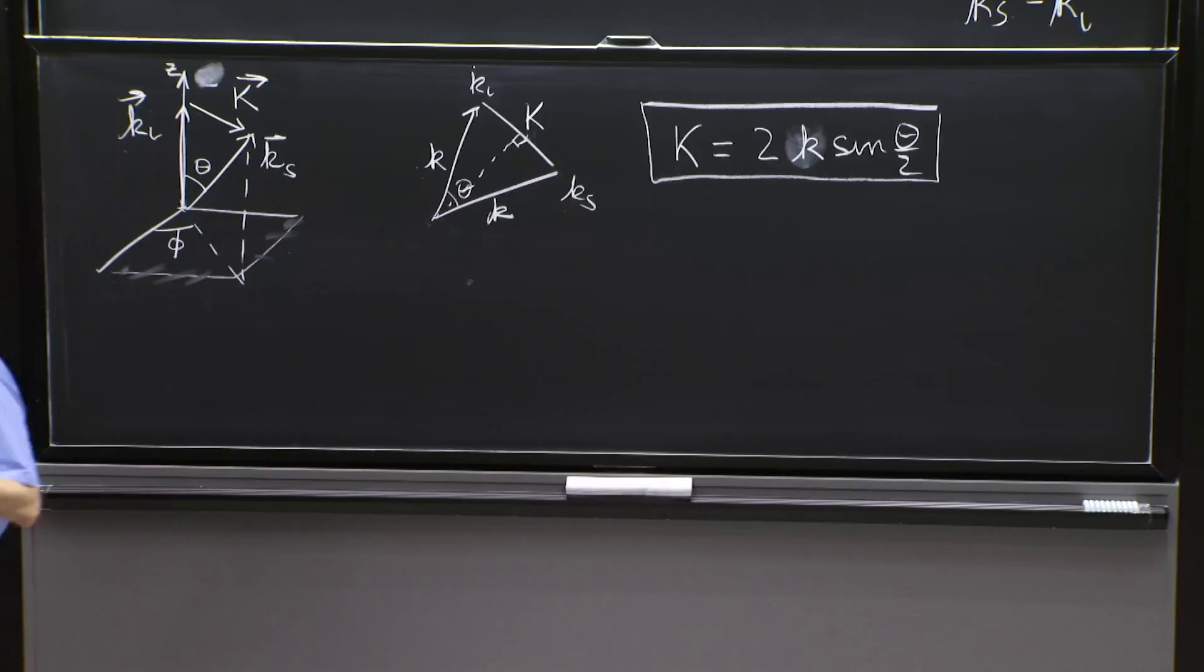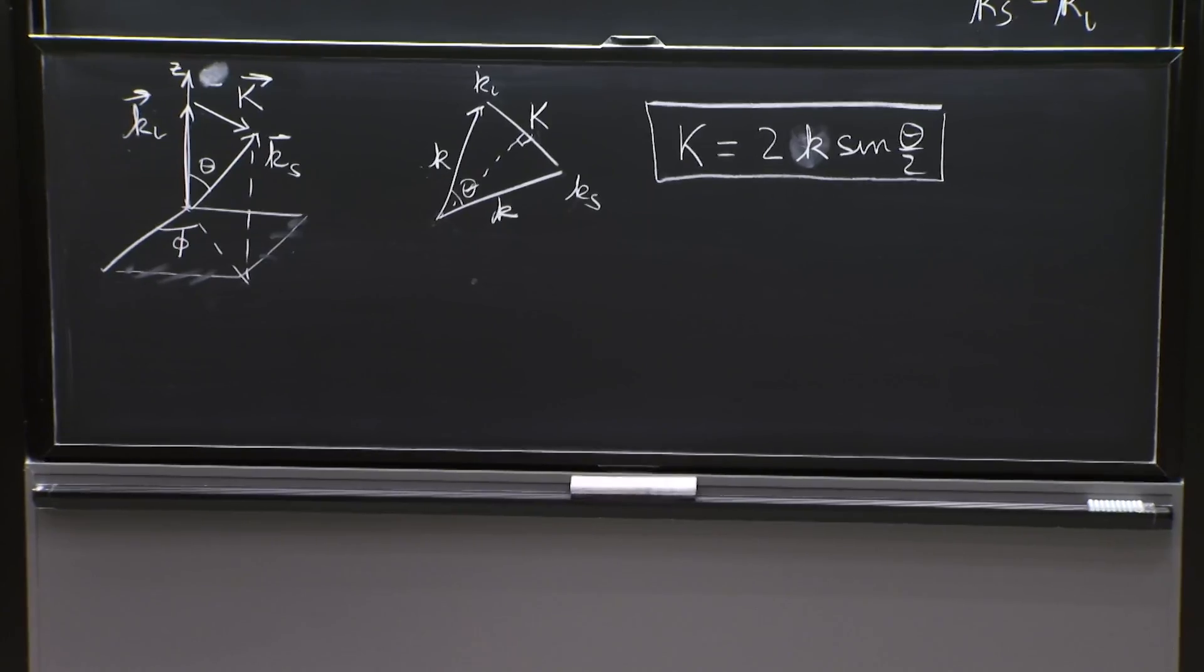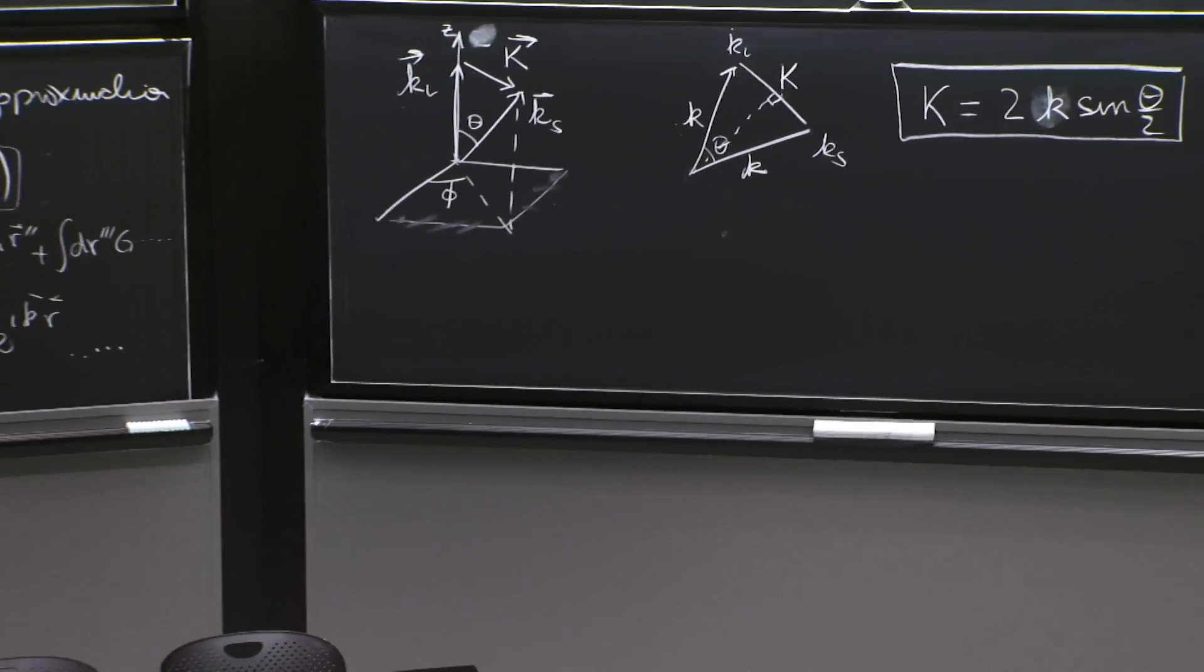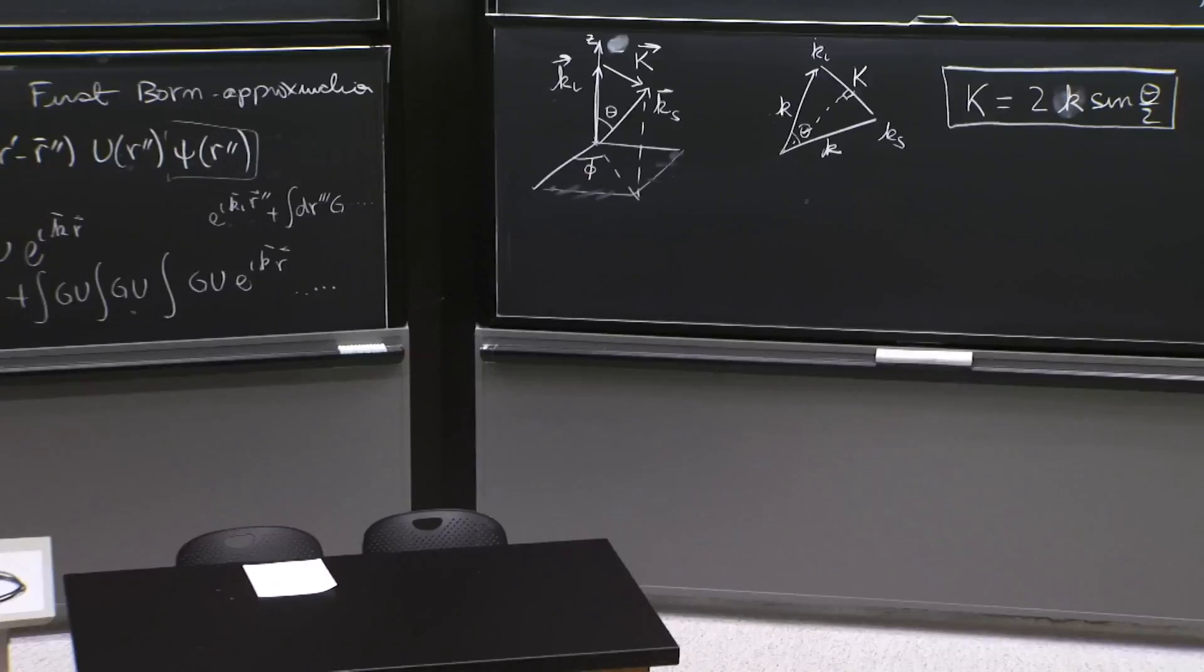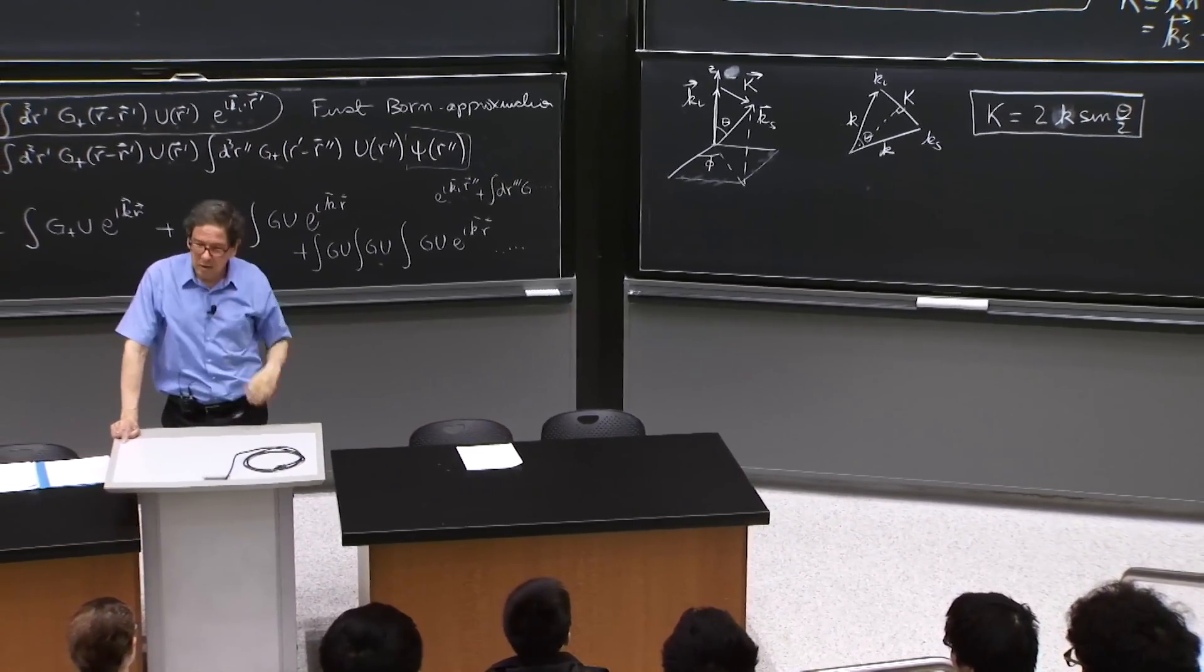So this is an approximation. But look how powerful approximations are in general in physics. This approximation is an approximation for the scattering amplitude. First, it's a very nice physical interpretation in terms of a Fourier transform of potential.